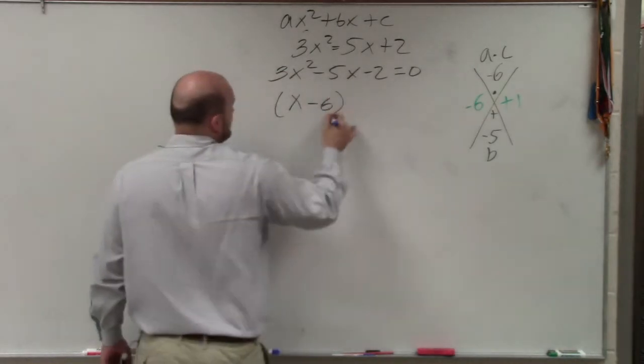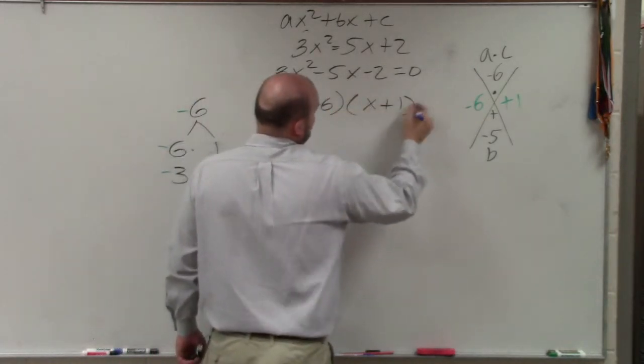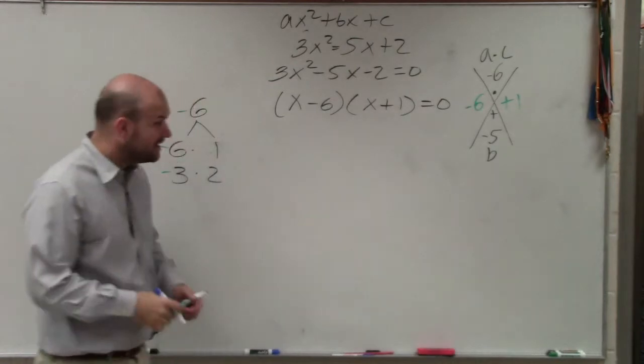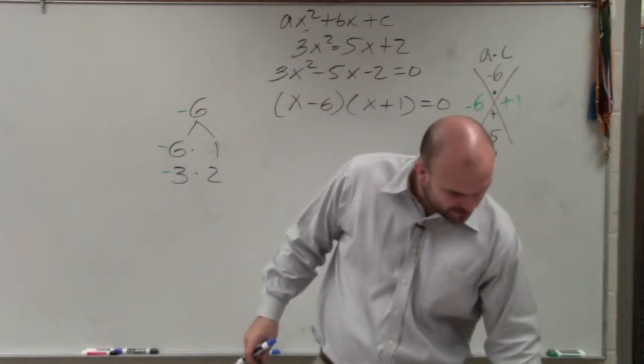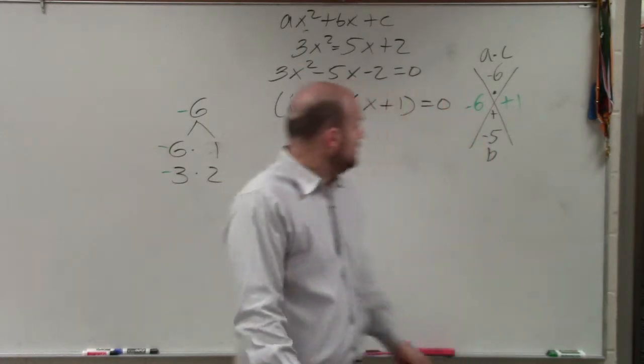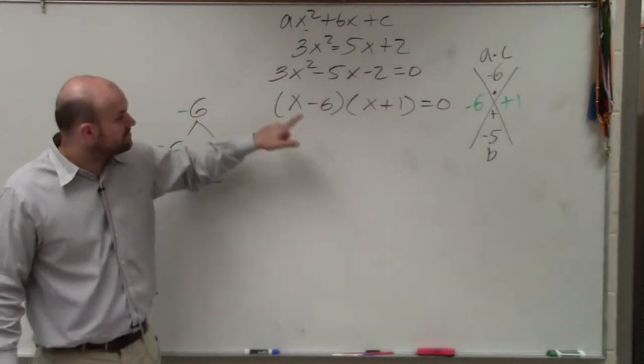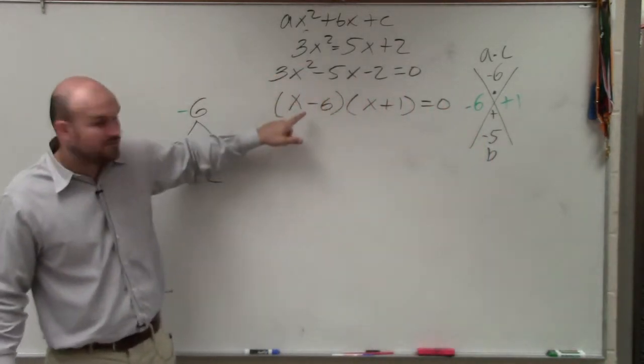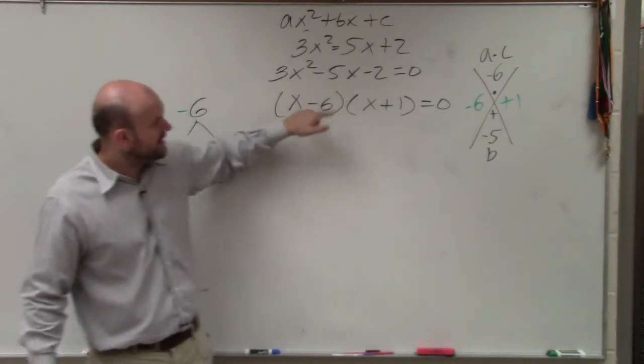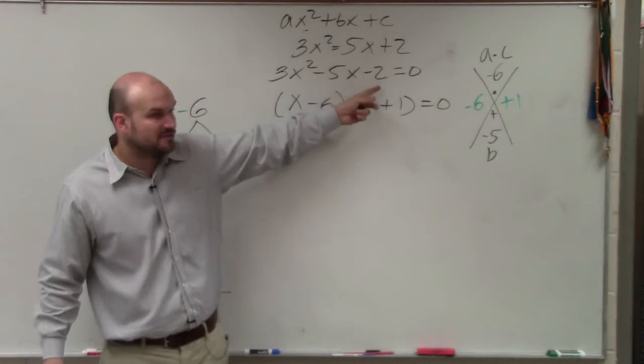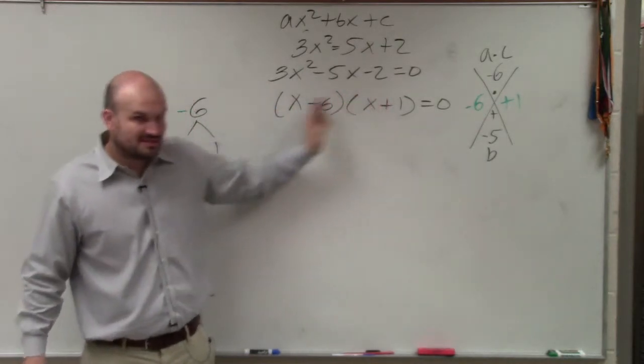Now, the main problem that students will do, which even in pre-calculus I still have students do it, is they'll do it just like we had the a equals 1. What they'll basically do is solve like this. But guys, this is not the factored form. x times x gives you x squared, not 3x squared. Negative 6 times 1 does not give you negative 2. So this does not work.